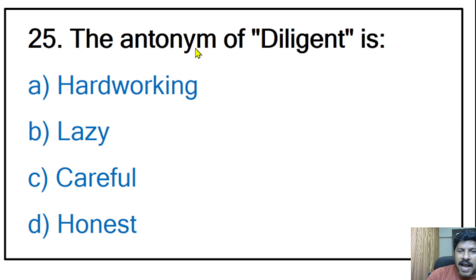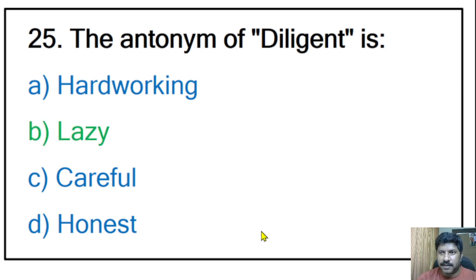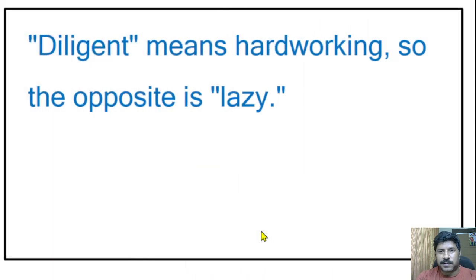Twenty-fifth question: the antonym or opposite of 'diligent' is hard-working, lazy, careful, or honest? The correct answer is lazy. Diligent means hard-working, so its opposite is lazy. That concludes today's video. We have discussed around 25 questions. If you have any doubts, please ask in the comment section. Please share with your friends, prepare well, and good luck for your upcoming BSc nursing entrance.